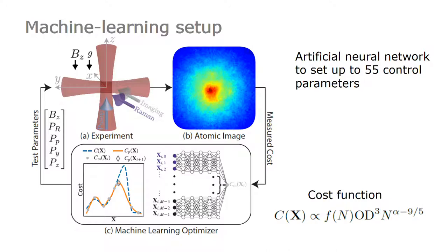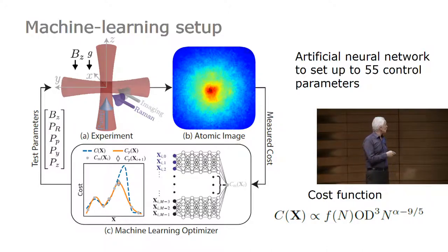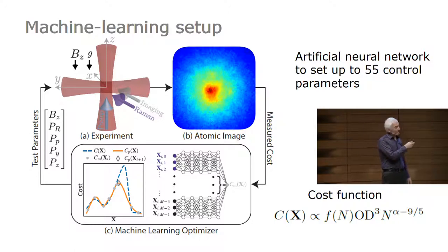We set up a system with essentially the same cross-dipole trap setup, and we took a machine learning algorithm M-loop that we allowed to control a variety of parameters in time-dependent steps — the two dipole traps, the power of the Raman coupling beam driving two-photon Raman transitions between velocity classes, the power of the optical pumping beam setting the rate of entropy removal, and the magnetic field setting the resonance condition for the Raman process. The system then takes an image on a camera of an atomic cloud from which we extract the atom number and fit the peak optical density.